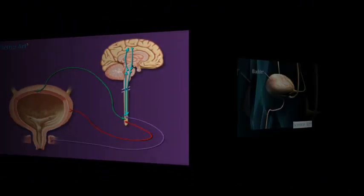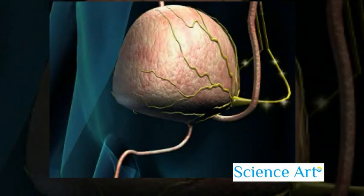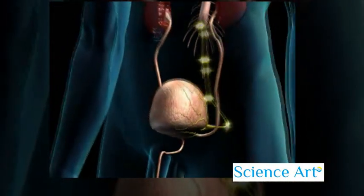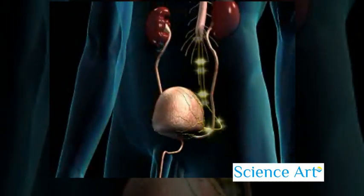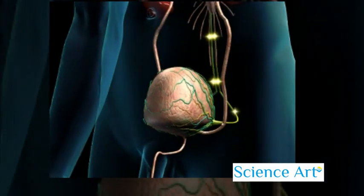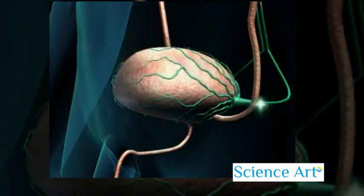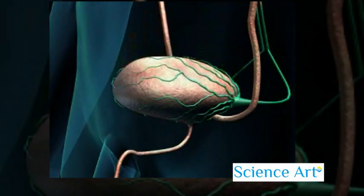When the bladder fills with urine, sensory nerves send impulses to the brain indicating that the bladder is full. The sensory nerves connect with other nerves in the spinal cord to relay this information. In turn, the brain sends impulses back to the bladder, instructing it to empty its contents.